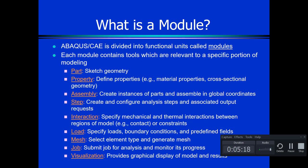Abaqus is divided into functional units called modules, and each module contains tools relevant to a specific portion of the modeling. You move through these modules in a sequential fashion. You start by sketching the geometry in the Part module, then move to the Property module to define the properties, which include material properties as well as cross-sectional geometry. Once you have your part and property defined, you move to the Assembly module to create instances of parts and assemble them in the global coordinates.